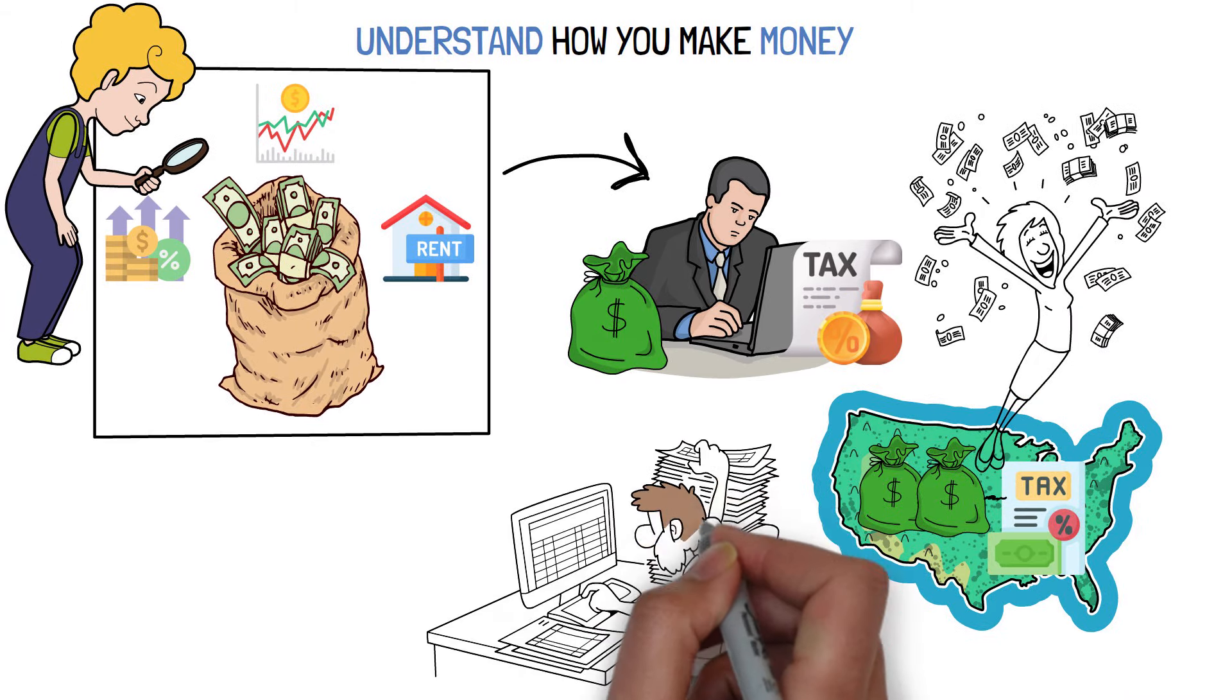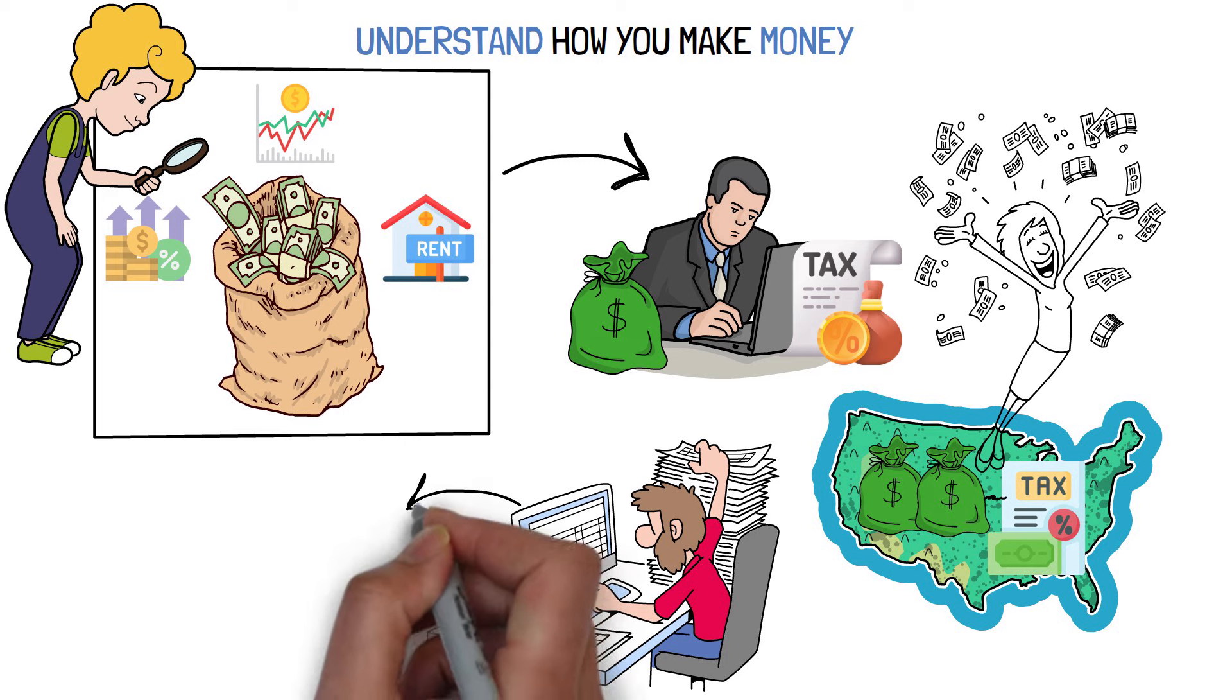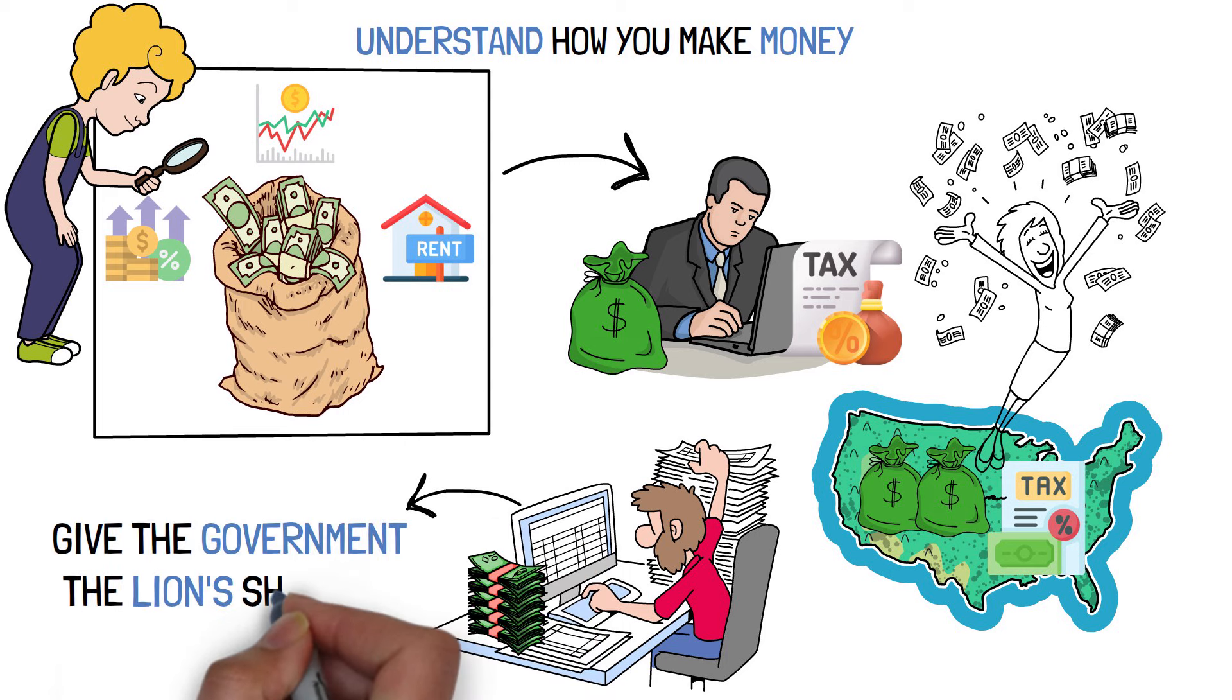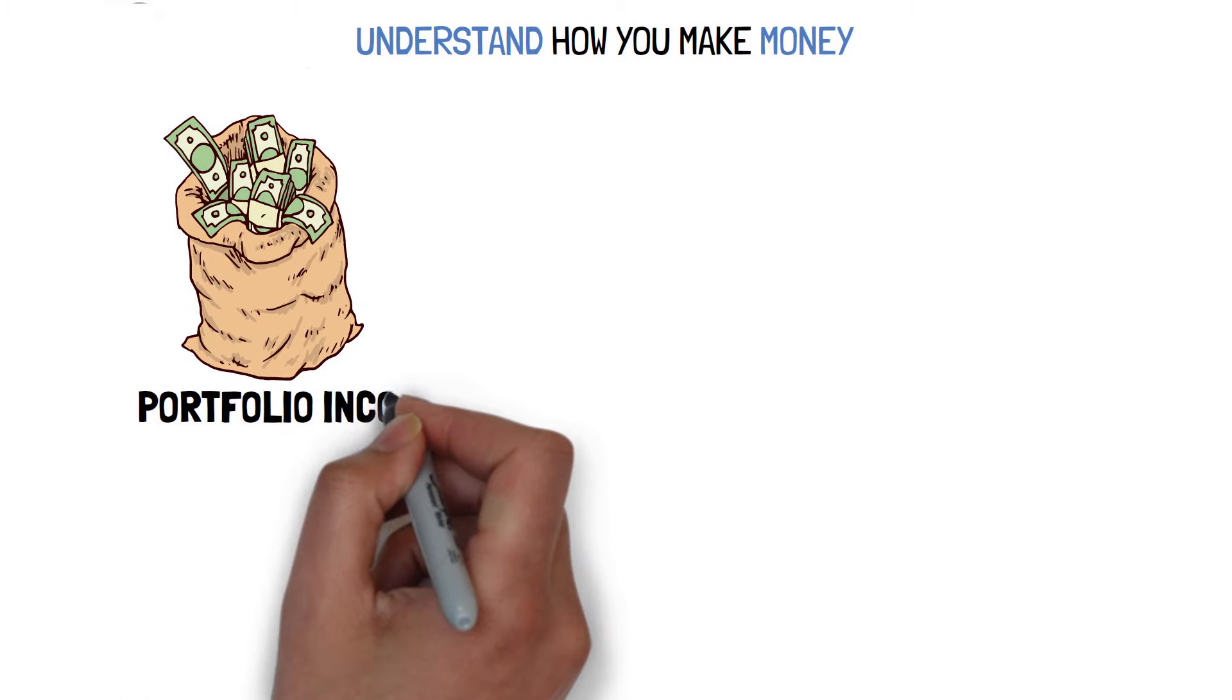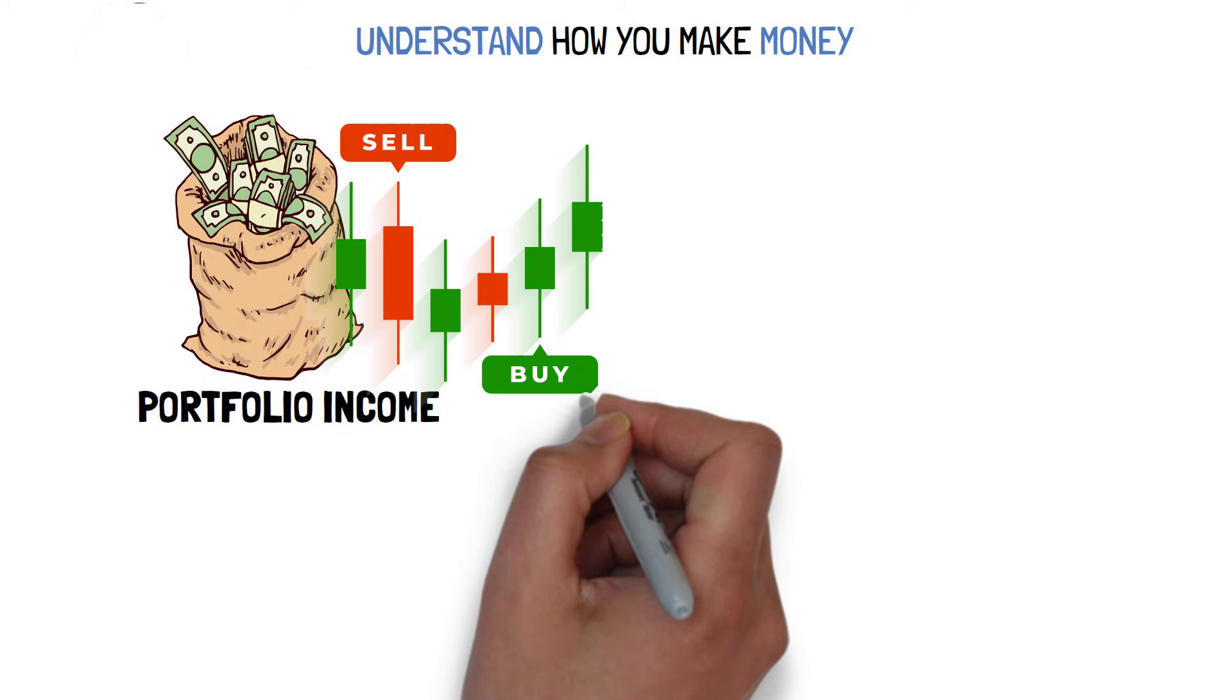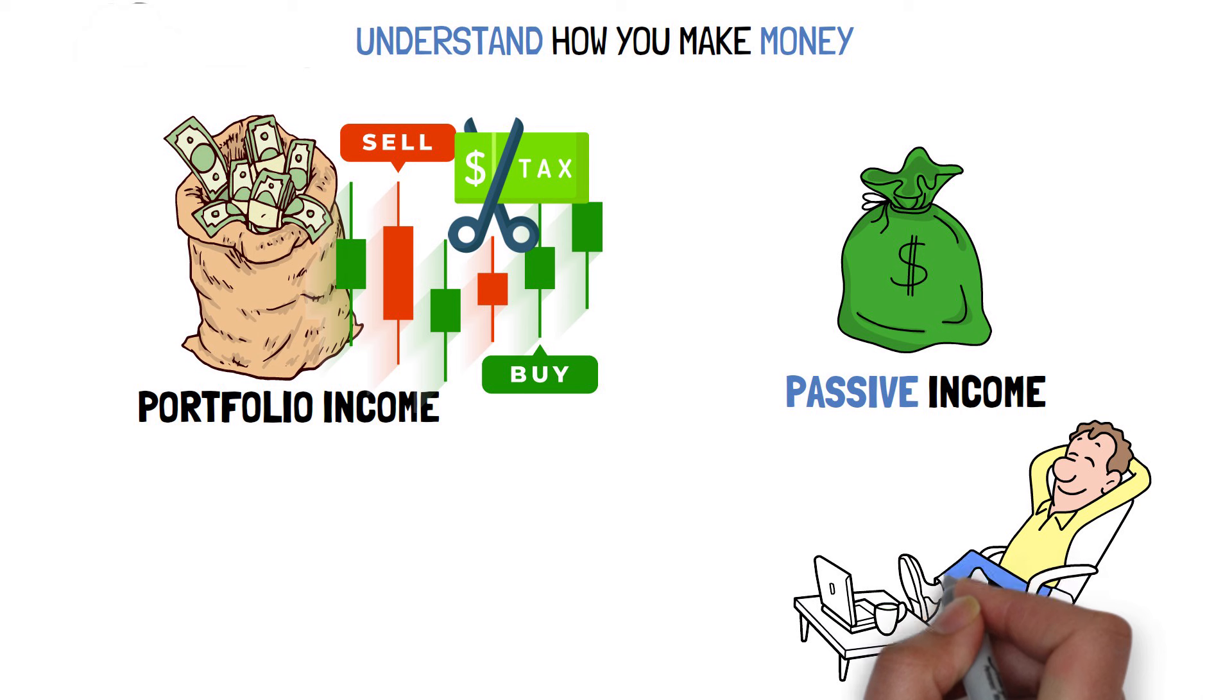You work hard, which is usually the most difficult method to make money, only to give the government the lion's share of your earnings. Portfolio income, which might include profitably purchasing and selling stocks, is taxed at a lower rate, making it far superior to receiving a wage.